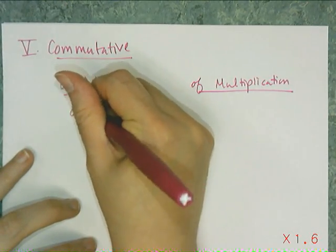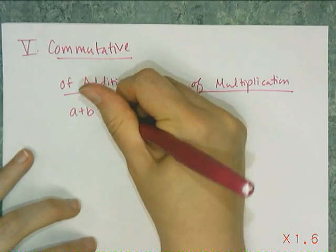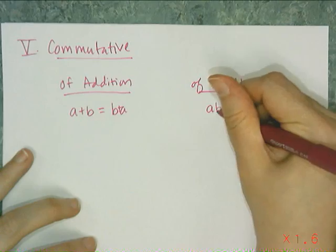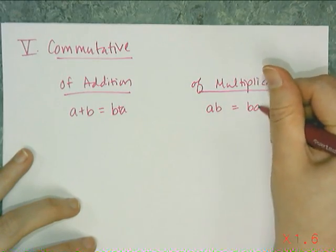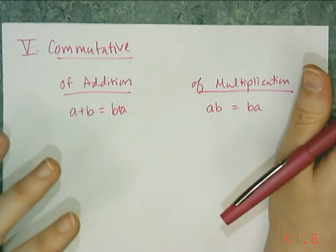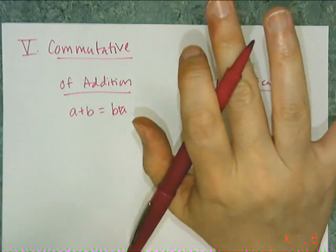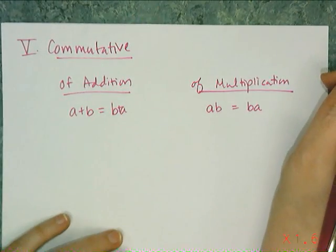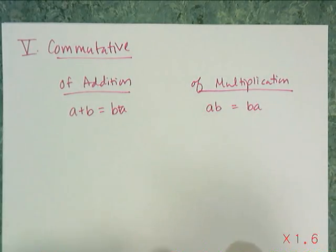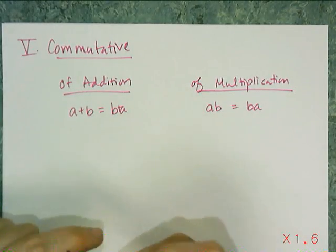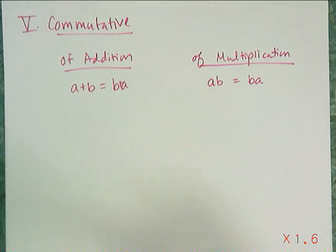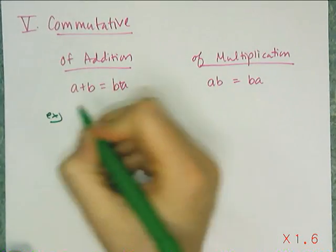There are two versions: commutative of addition and commutative of multiplication. If I have a + b, it's mathematically equivalent to b + a. And if I have a × b, it's mathematically equivalent to b × a. Notice it's not subtraction and not division — subtraction does not commute, division does not commute. The only two operations that do commute are addition and multiplication.